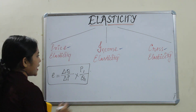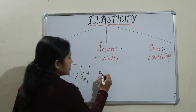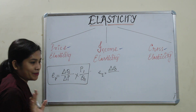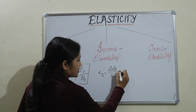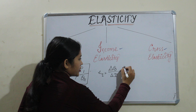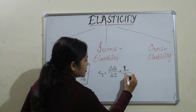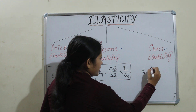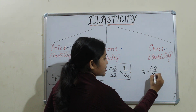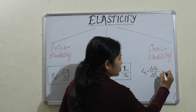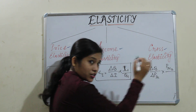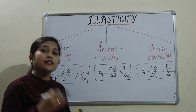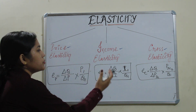Similarly, income elasticity: in place of price, we substitute income. So it is change in quantity divided by change in income, multiplied by initial income divided by initial quantity. For cross elasticity, it is change in quantity divided by change in price of related commodity, multiplied by initial price of related commodity divided by Q1. These are the formulas through which we can calculate elasticity using the percentage method.